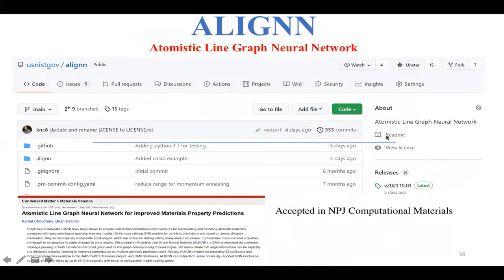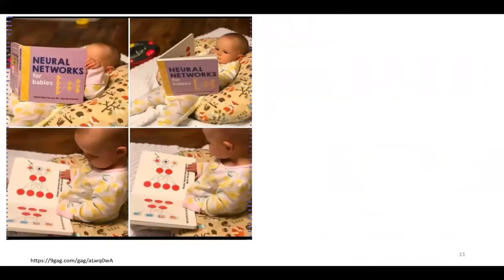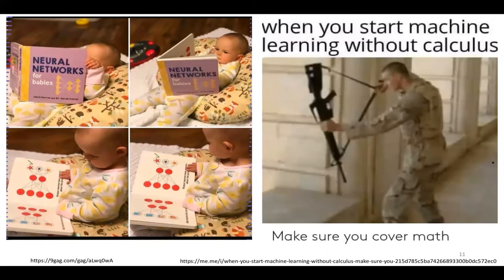Let's talk about the atomistic line graph network (ALIGNN), available at the NIST ALIGNN repository. The preprint is already available on arXiv and this paper is accepted in NPJ Computational Materials. Neural networks are very popular — so popular that books are being made for babies — but we have to keep in mind that when doing machine learning, we need at least a certain understanding of linear algebra and calculus. We are also working on a review article on deep learning for material science with collaborators from Materials Project, AFLOW, OQMD, Carnegie Mellon, Northwestern, and Columbia.